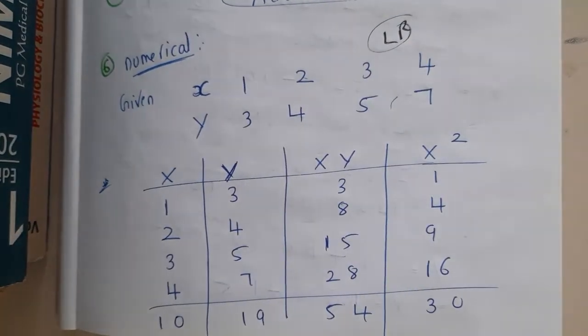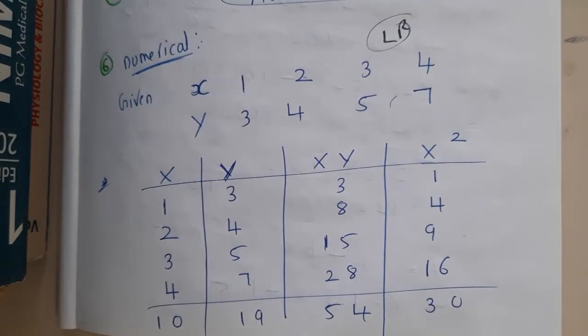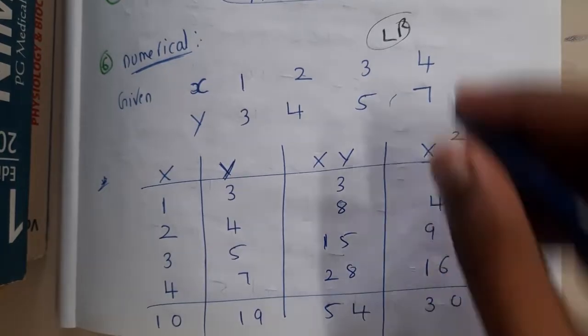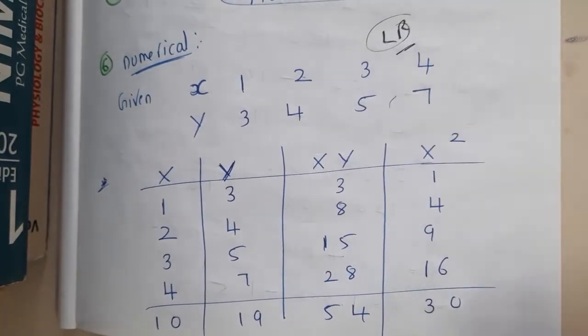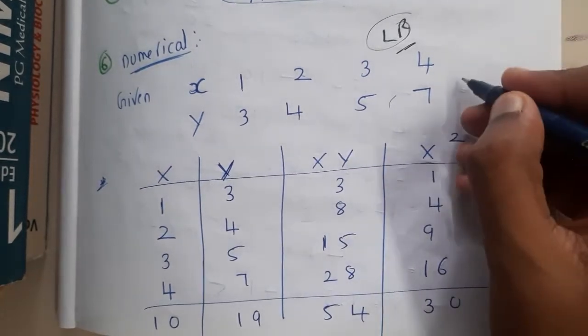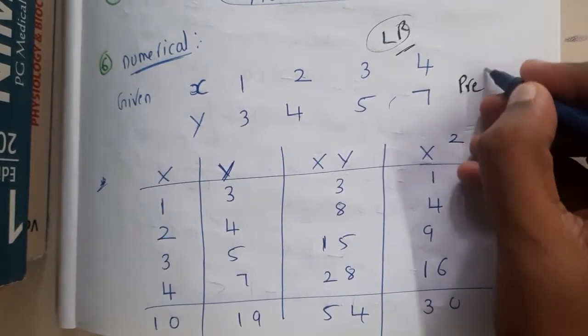If they mention the method name linear regression, even a small kid can solve it if they know the formula. They will just substitute the values and get the answer. That is the reason why in examinations, instead of giving the method name, they will say directly to predict the values.